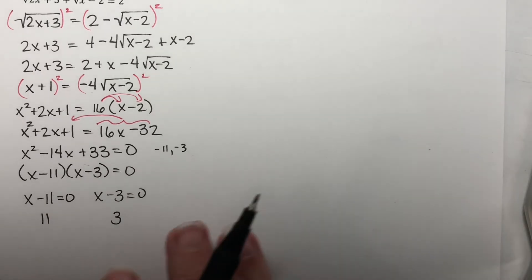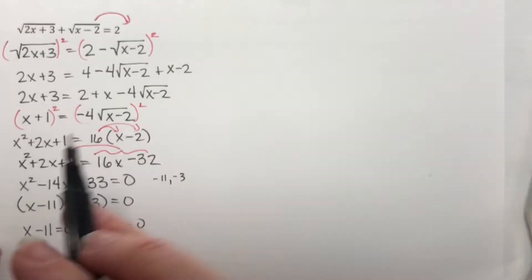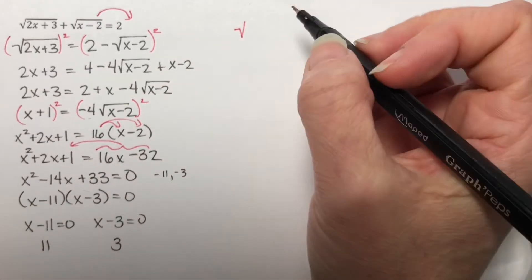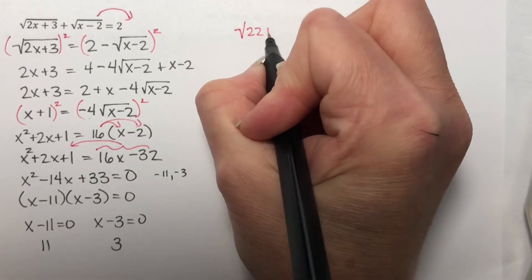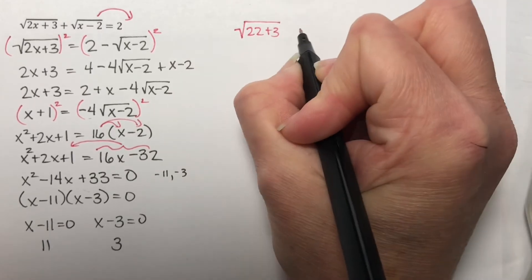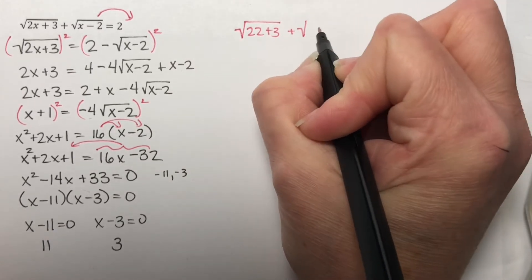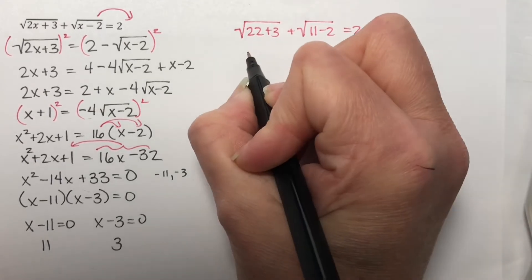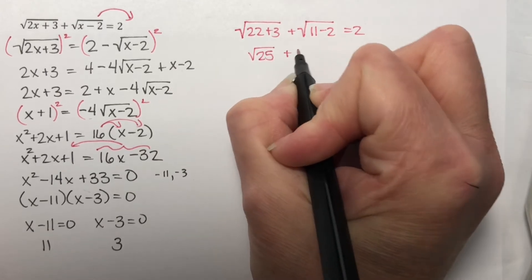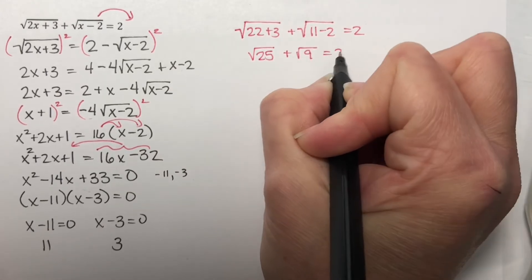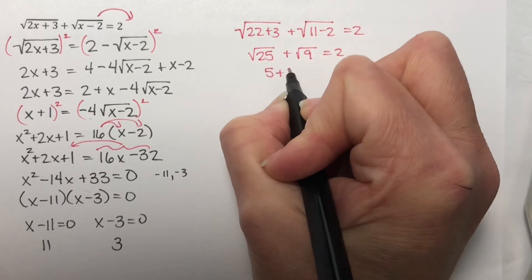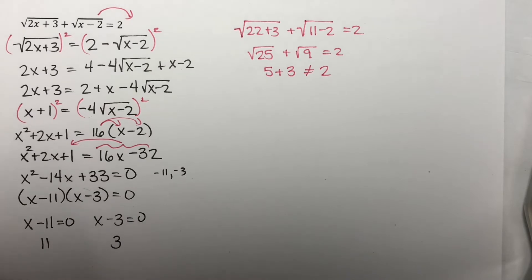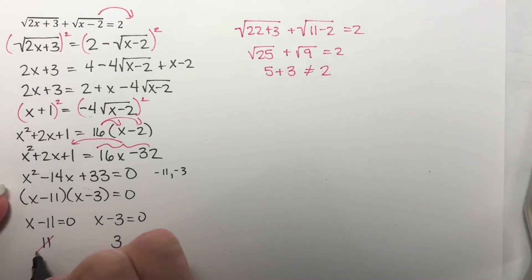And I need to check both of these. So checking 11. Let's take 11 and plug it in up here. That would be the square root of 2 times 11 is 22, plus 3, plus the square root of 11 minus 2, equals 2. So that's the square root of 25, plus the square root of 9, equal to 2. And that's 5 plus 3, which is not equal to 2. So 11 was not a good solution.